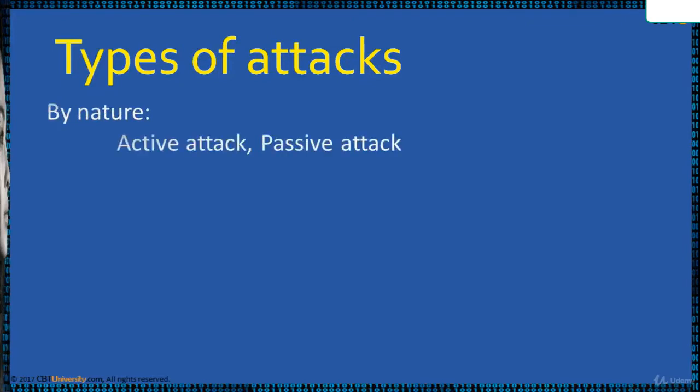An Active attack modifies the resources during the attack in a network. Examples include: DoS attack, spoofing, man-in-the-middle, poisoning, ping flood, ping of death, smurf attack, etc. On a host: buffer overflow, heap overflow, stack overflow, format string attack, etc.